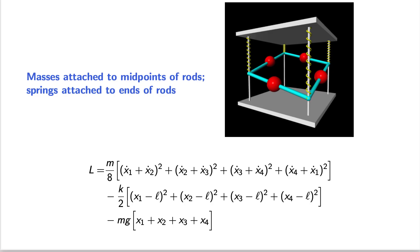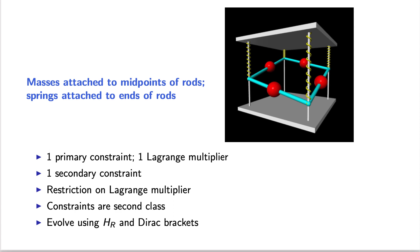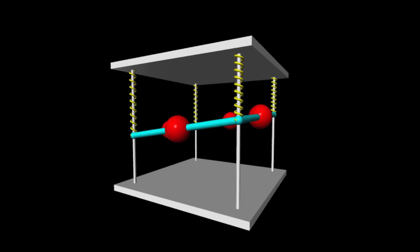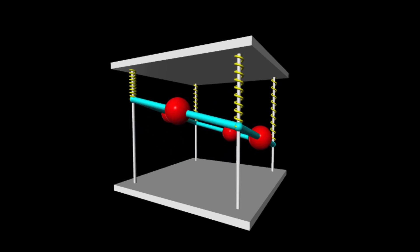This next system consists of four rods with masses at the midpoints. The rods are connected at the corners and slide freely up and down on vertical posts. The generalized coordinates x1 through x4 denote the height of each corner above the floor. The Lagrangian is singular. Applying the Dirac-Bergman algorithm, we find one primary constraint and one Lagrange multiplier, one secondary constraint, and the Lagrange multiplier is restricted. The constraints are second class. As in the previous examples, this simulation uses the reduced Hamiltonian and Dirac brackets to generate the equations of motion.